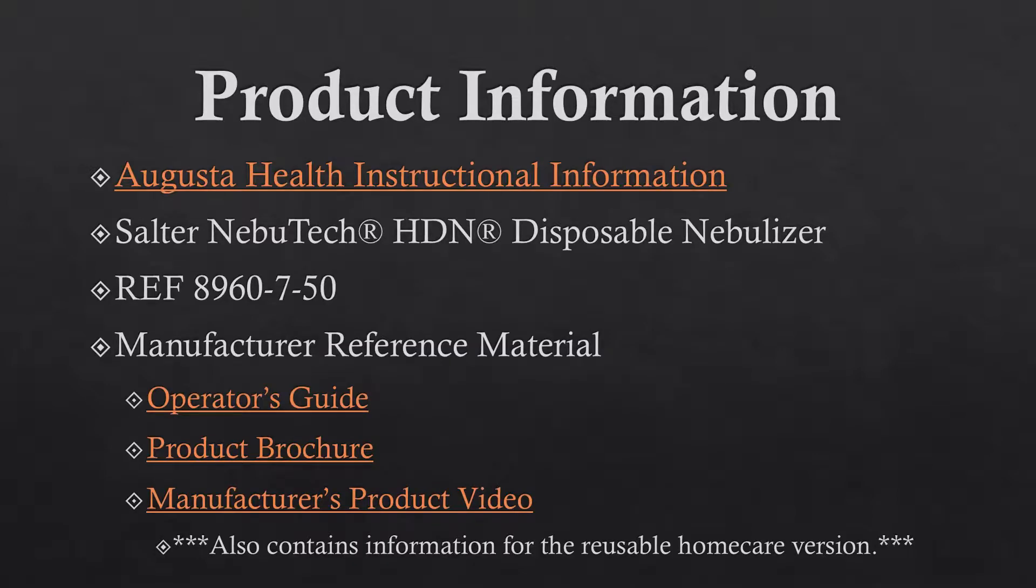You can click on the information bar below the video for the following attachments: the Augusta Health instructional information, which is also available on the CSEMS website under recent news and the drug box web page. The device is called the Salter Nebutek HDN disposable nebulizer with the reference number 8960-7-50. Other manufacturer reference materials include the operator's guide, the product brochure, and the manufacturer product video, which is a YouTube link that you can click below. Note that the manufacturer's product video also contains information for the reusable home care version.